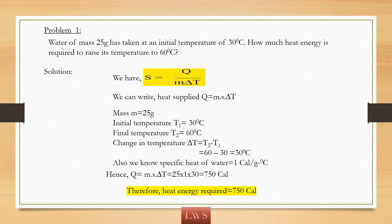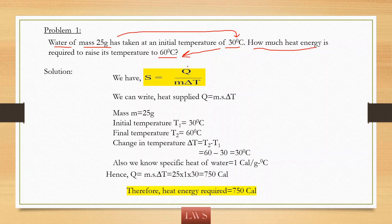Let us solve a problem. We are taking water of mass 25 grams whose initial temperature is 30 degree Celsius, and we want to raise the temperature from 30 degree Celsius to 60 degree Celsius. We need to supply some HEAT energy — how much? In the previous class, we derived the formula: specific HEAT equals Q divided by M delta T. Here Q is the heat energy supplied, M is mass, and delta T is change in temperature. From this, heat supplied Q equals M times S times delta T.